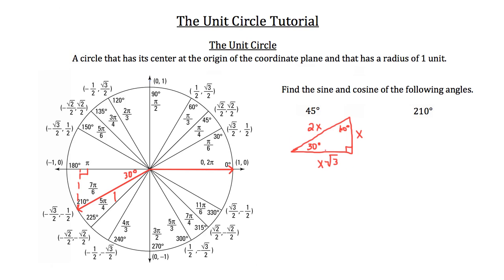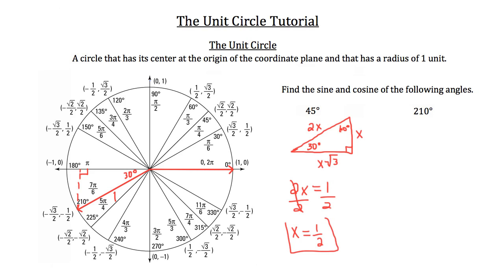So our arbitrary value 2x equals 1. To solve for x, I divide by 2 on both sides, giving x equals 1 half. Plugging back in: the side across from the 30-degree angle has a value of 1 half, and the side across from the 60-degree angle — x root 3 — has a value of 1 half times root 3, which is root 3 over 2.